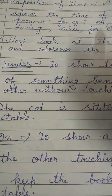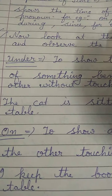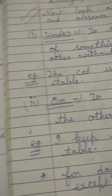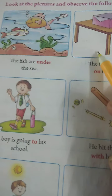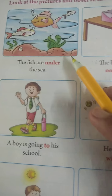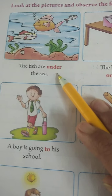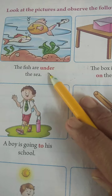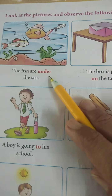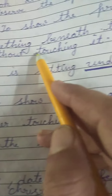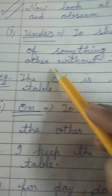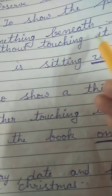These prepositions all show the time of a noun or pronoun. Now we will discuss specific prepositions. Look at your book — here are the prepositions. Look at the pictures and observe the following prepositions. First example: the fish are under the sea. Here, 'under' is the preposition. Under is used to show the presence of something beneath another object without touching it.